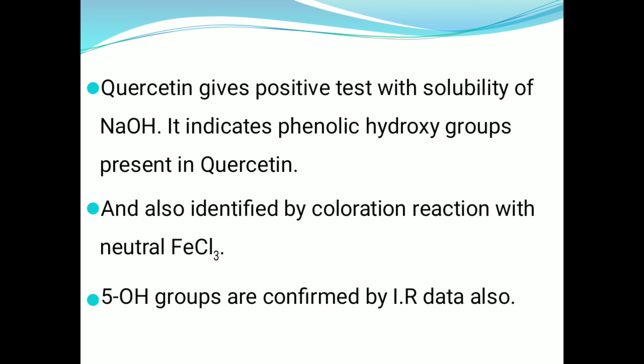Quercetin gives a positive test with neutral ferric chloride solution, giving a color reaction. This reaction also indicates that quercetin contains phenolic hydroxy groups. IR data also confirmed that 5 OH groups are present in quercetin.